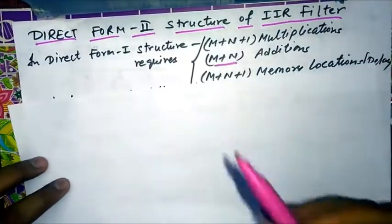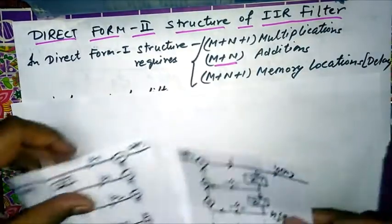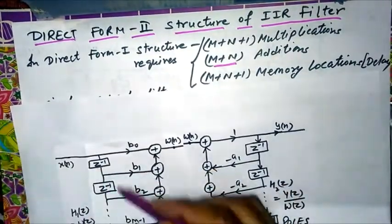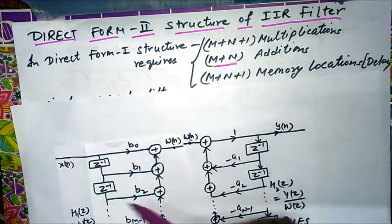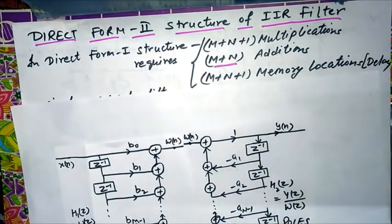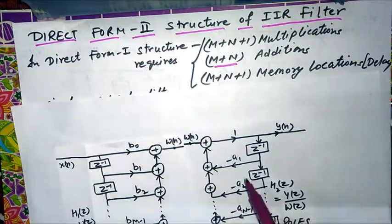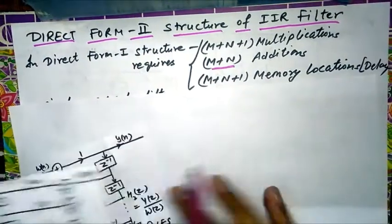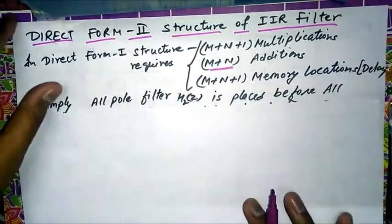In Direct Form 1 structure, there are two types of delays — delays for the zeros section and delays for the poles section, so double memory elements are used. To minimize these memory elements, we overlap them by inverting the poles and zeros structures.